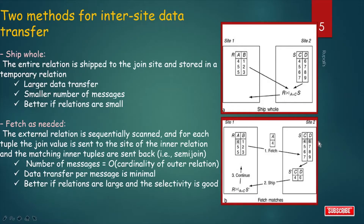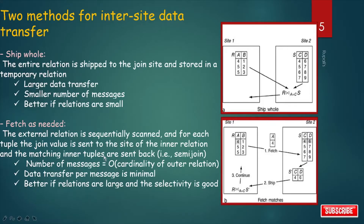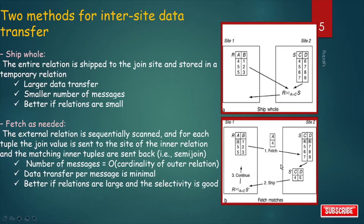The second method is 'page as needed': the external relation is sequentially scanned, and for each tuple the join value is sent to the site of the inner relation, and the matching inner tuples are sent back — this is essentially a semi-join. The number of messages is on the order of the cardinality of the outer relation, data transfer per message is minimal, and it is better when relations are large but selectivity is good.